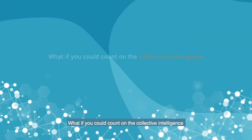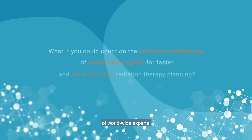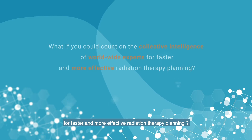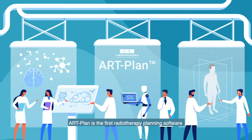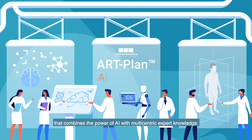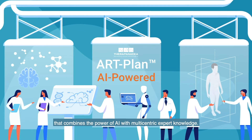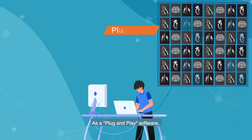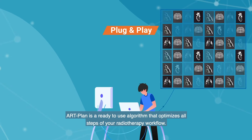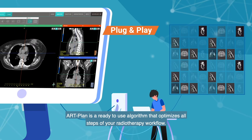What if you could count on the collective intelligence of worldwide experts for faster and more effective radiation therapy planning? Artplan is the first radiotherapy planning software that combines the power of AI with multi-centric expert knowledge. As a plug-and-play software, Artplan is a ready-to-use algorithm that optimizes all steps of your radiotherapy workflow.